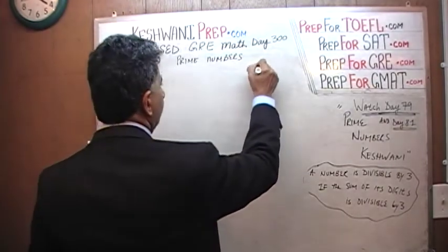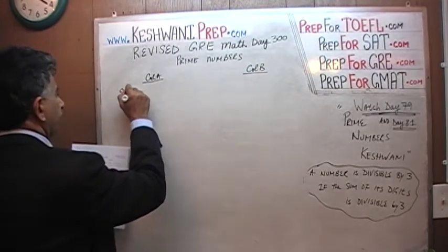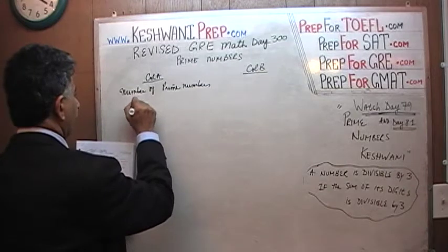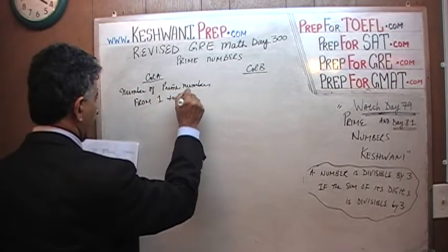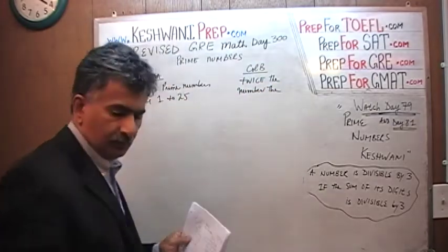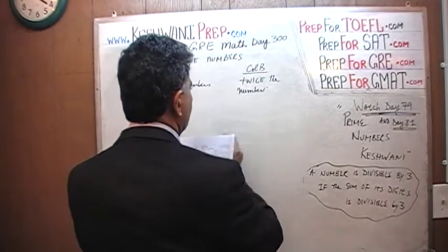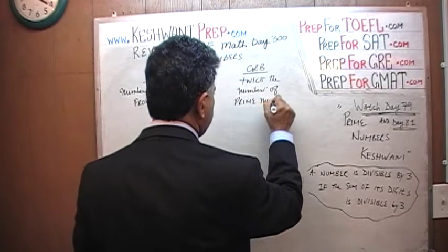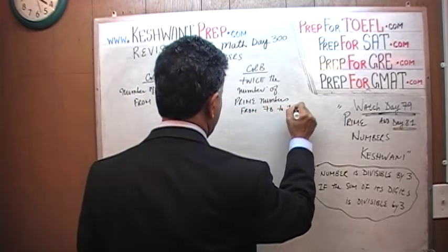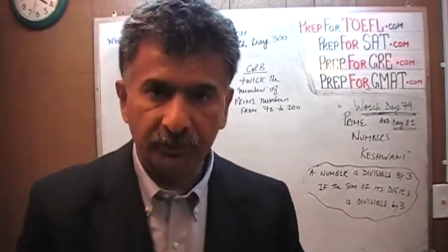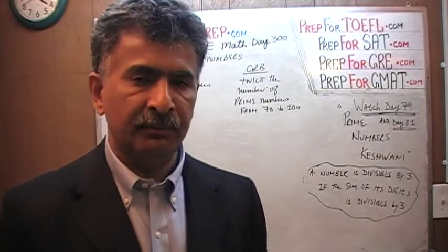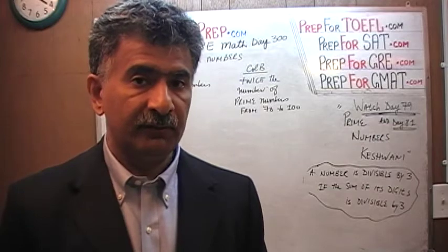Here is our Column A and here is our Column B. Column A has the number of prime numbers from 1 to 25. Column B has twice the number of prime numbers from 76 to 100. Very simple, very straightforward question. All we have to do is make sure we don't mess up our prime numbers — don't miss any, and don't accidentally include something that is not a prime number.